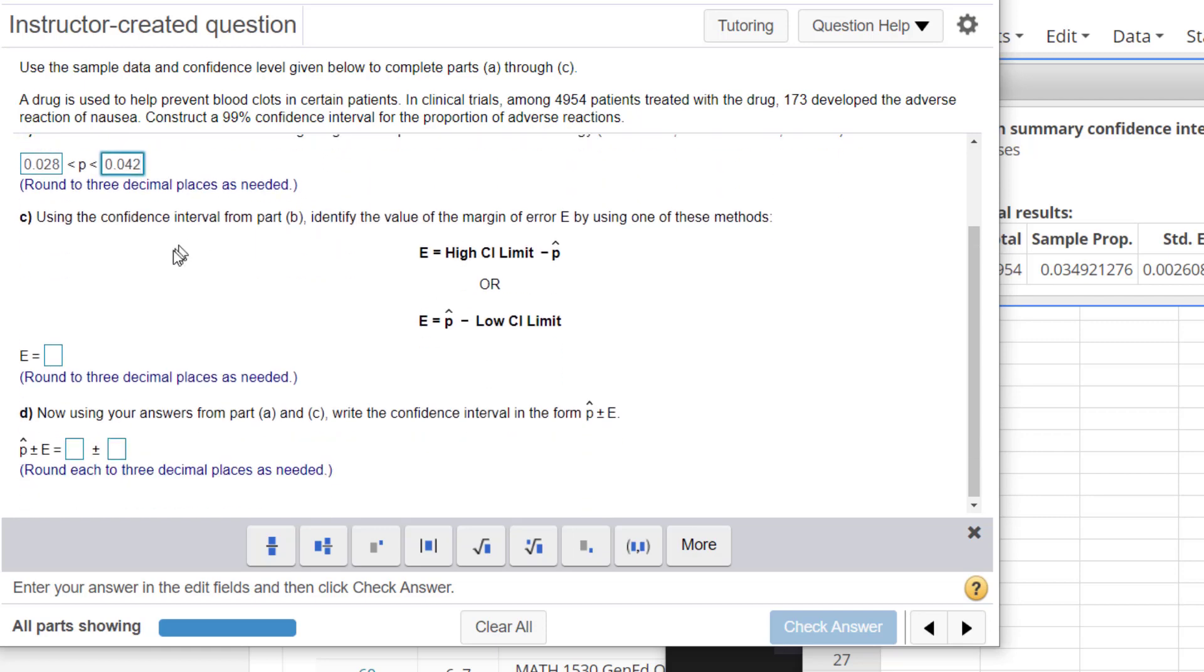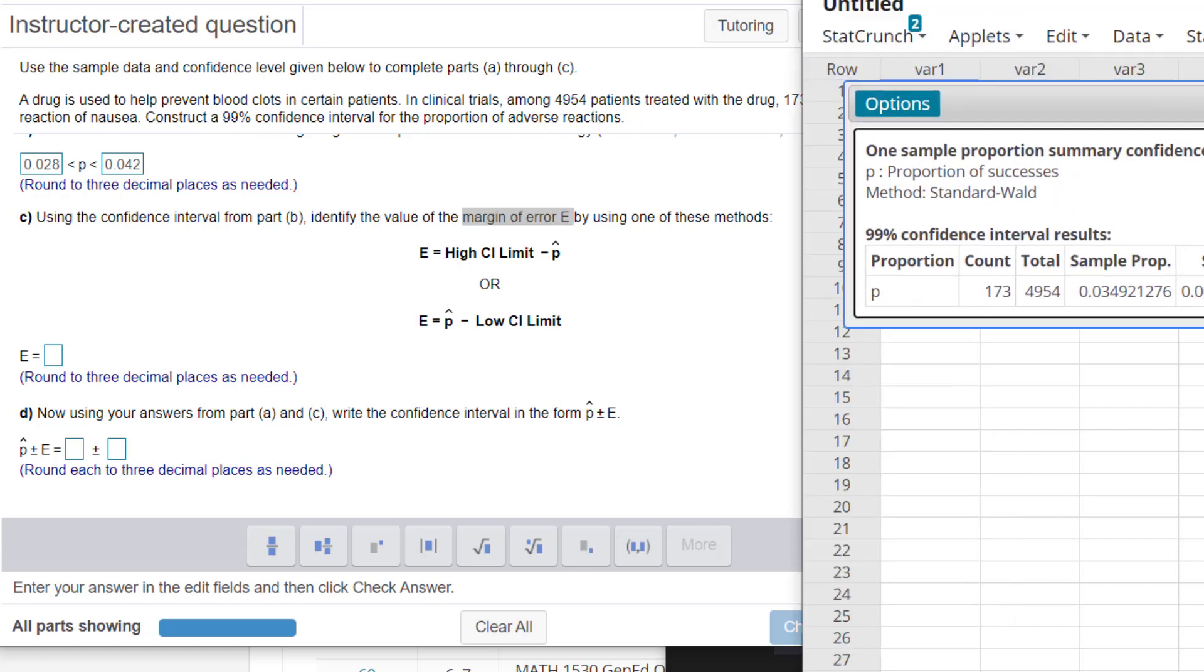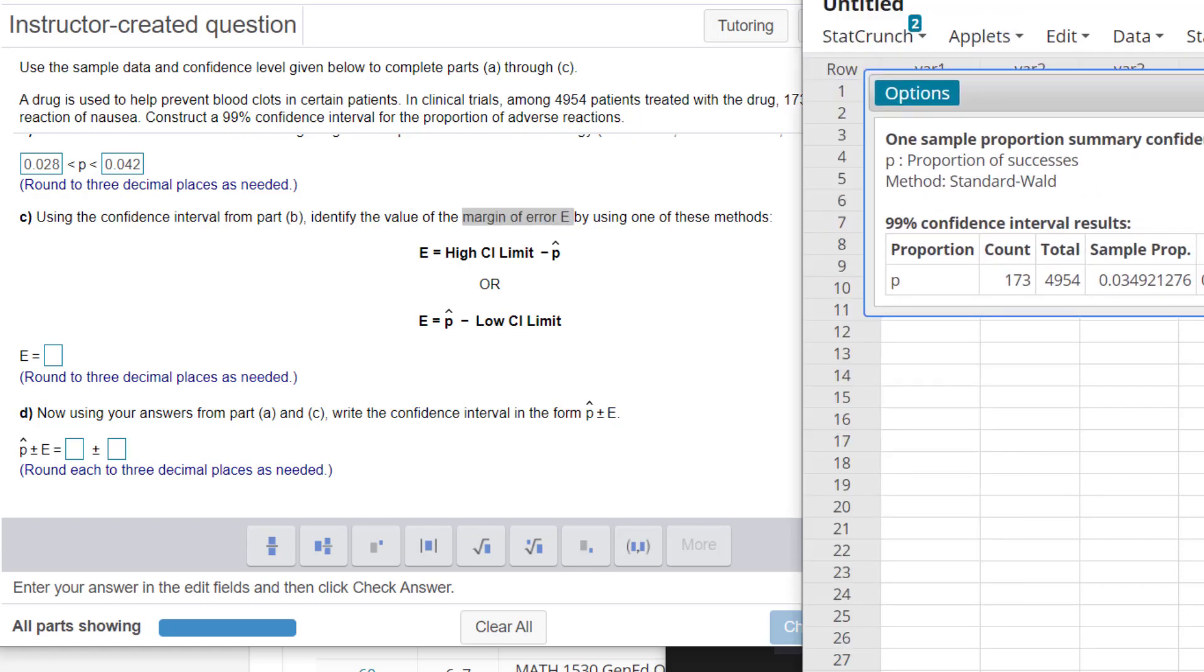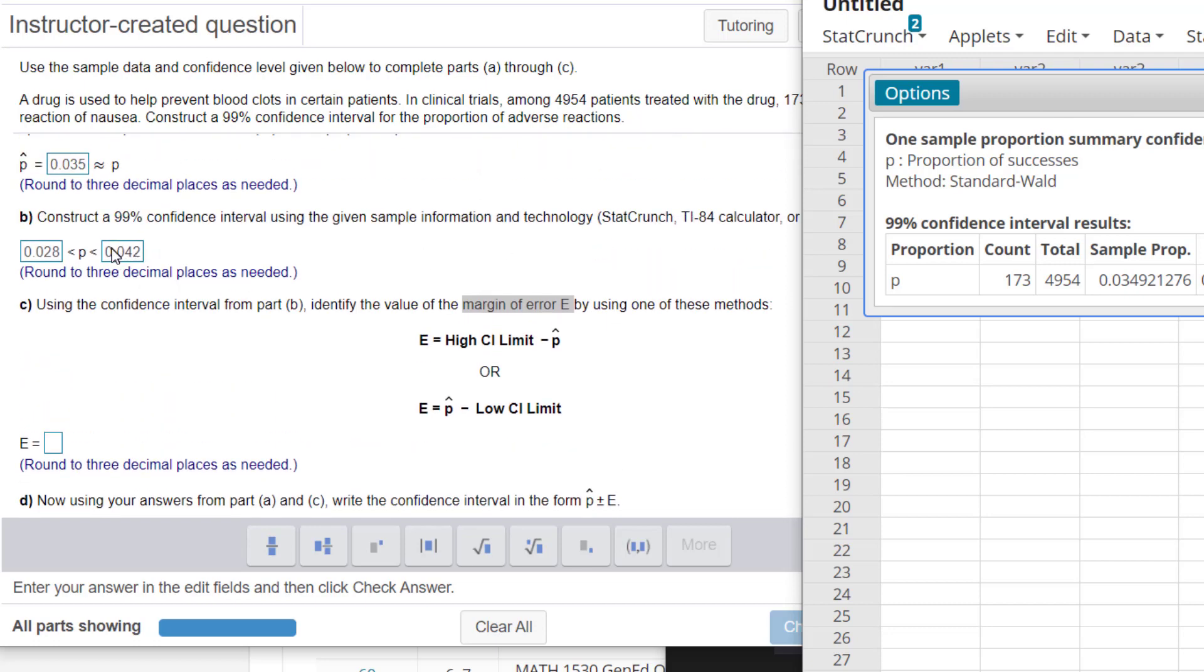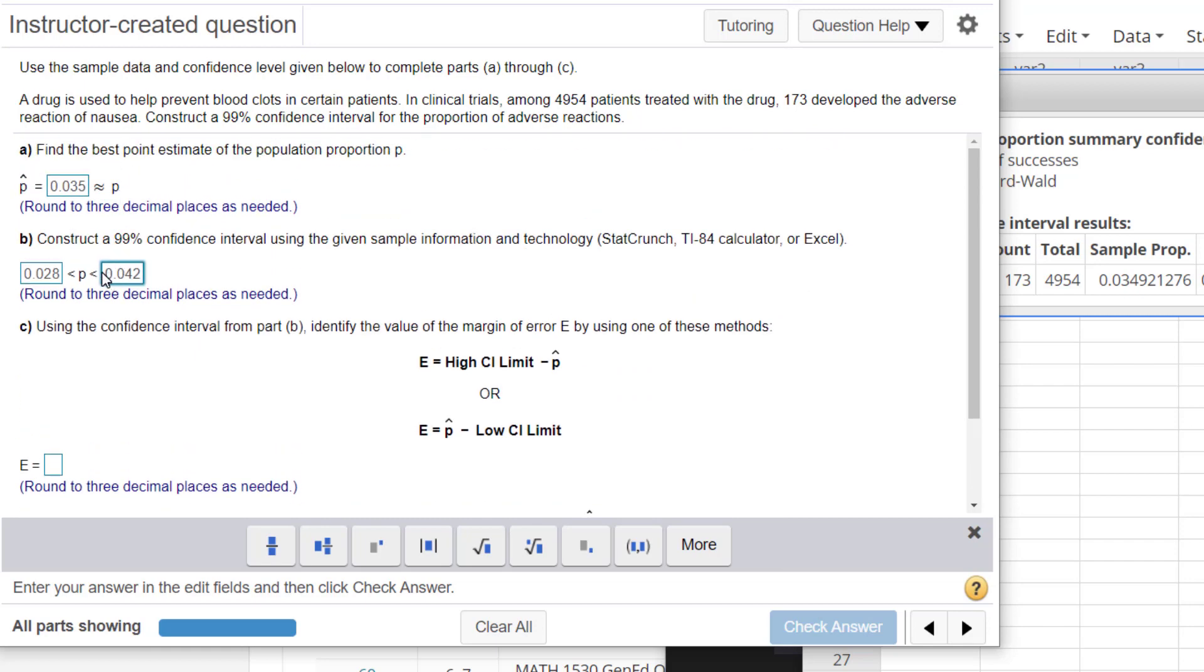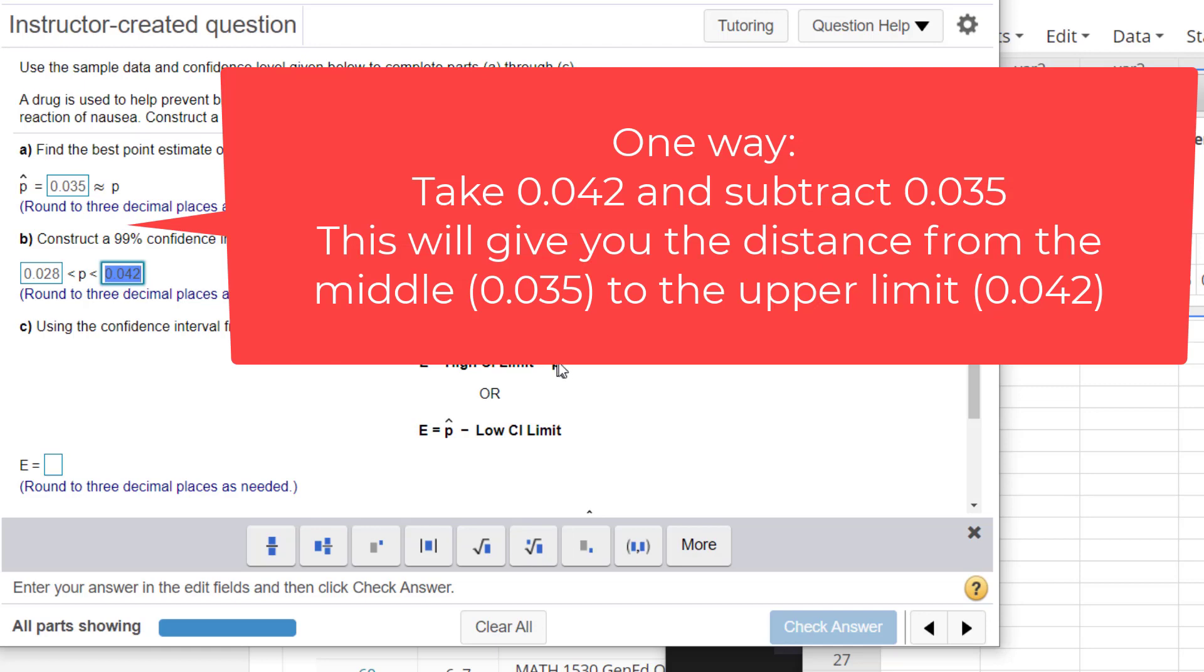Now this is the part that's kind of new here that you haven't done before. It's you identifying the margin of error E and you have a few different methods you can use to calculate this. But you do have to find the confidence interval in StatCrunch first before you go into finding this margin of error. You can actually do it one of two ways. You can take your upper confidence limit and then subtract the P hat that you got in the beginning, so basically the middle of your confidence interval.